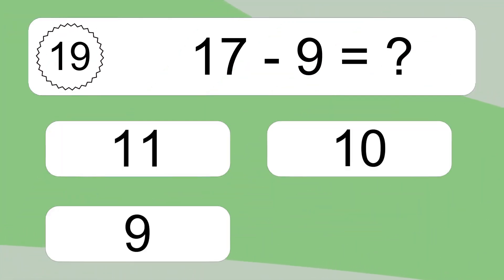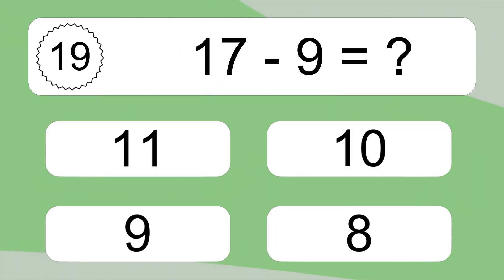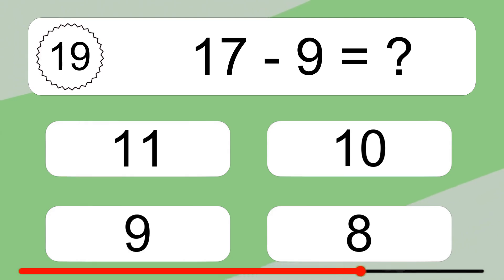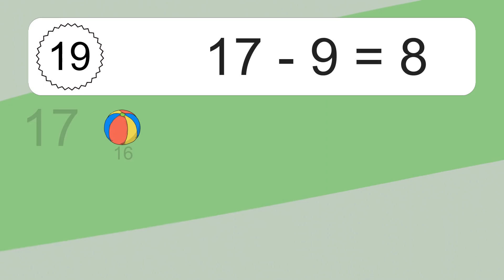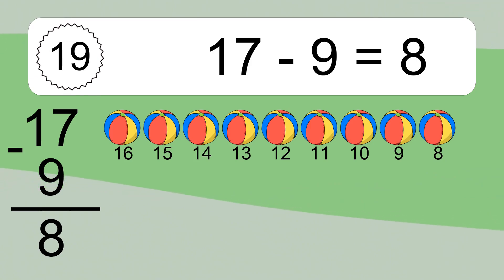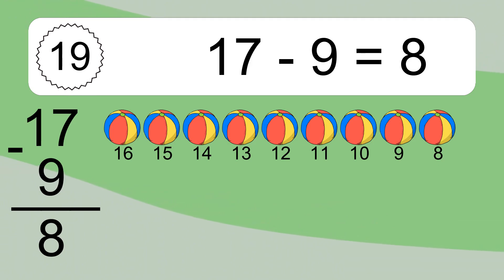17 minus 9 equals what? 17 minus 9 equals 8. Let's count it. 16, 15, 14, 13, 12, 11, 10, 9, 8.